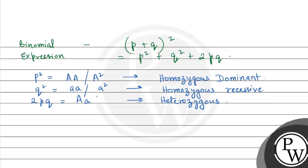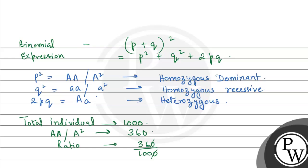Now, in the question what was given? Total individuals is 1000. The homozygous dominant population, that is both capital A or A², is 360. So if we calculate its ratio with respect to total individuals, it will be 360 by 1000. So the A² population ratio is 36 by 100.